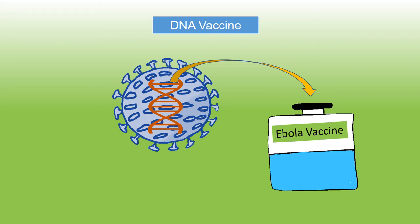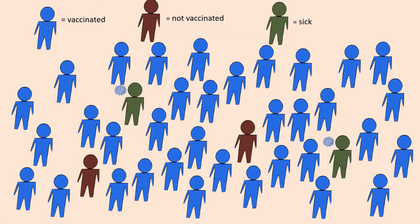The vaccines for Ebola and HIV are of this type. When most of the people in a region get vaccinated, the entire region achieves immunity. Some people may have health problems that don't allow them to receive a vaccine. By achieving herd immunity, pathogens can't reach them.